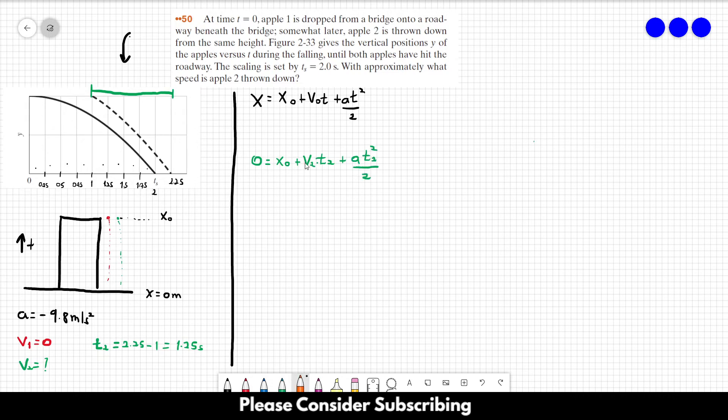Notice that the only things that we don't know in this equation are the height of the bridge and the initial velocity of the green apple, because t2 we know is 1.25 and the acceleration we know is 9.8. So if we find x0, we can find v0. Let's first isolate v0 in this equation. We have that v2 times t2 equals minus x0 minus at2 squared over 2. So v2 equals 1 over t2 times minus x0 plus at2 squared over 2.